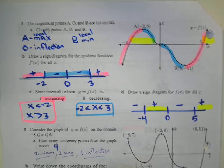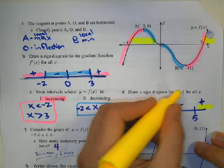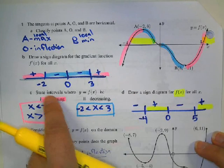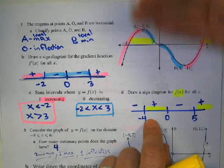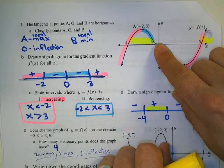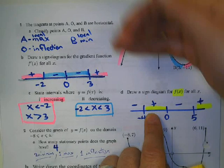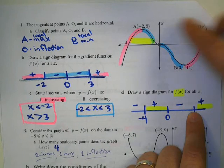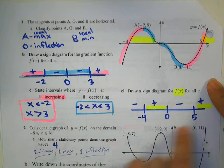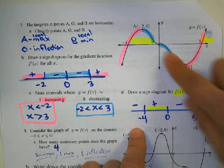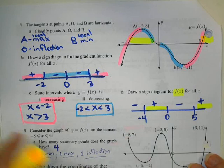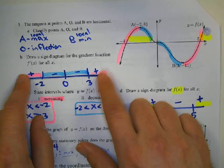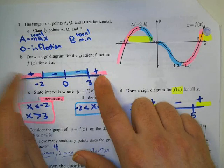Question D was a little tricky: draw a sign diagram for f(x) itself, not the derivative. When is the graph above the x-axis? From the picture, it's above the x-axis between negative 4 and 0, and also when x is greater than 5. Below the x-axis in the other regions. So the sign diagram of f(x) asks when the function value is positive or negative — above or below the x-axis. Mostly in this chapter we'll use the sign diagram of the derivative.